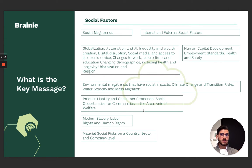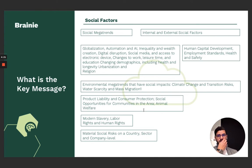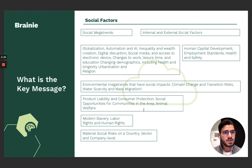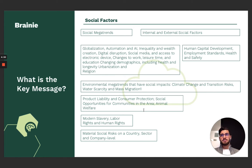In addition to these social megatrends, there are also environmental megatrends that have social repercussions: climate change and transition risks, water scarcity and mass migration. Mass migration is the result of climate change. If a location becomes unlivable because in summertime the daytime temperature exceeds 45 to 50 degrees, people will be forced to move to colder areas. This in turn may have unwanted effects on neighboring countries to the north, as any country would have difficulty taking in millions of migrants and integrating them into their existing ecosystem.